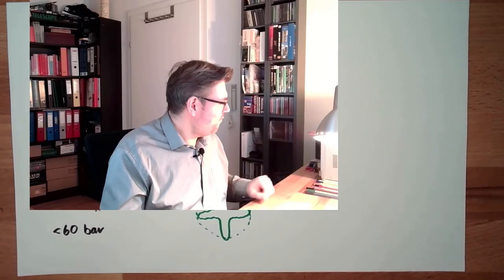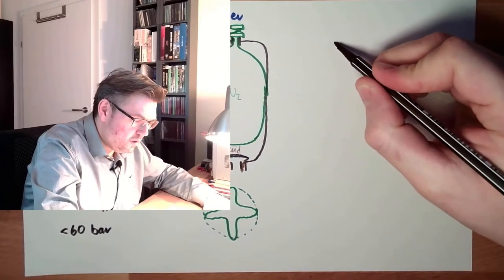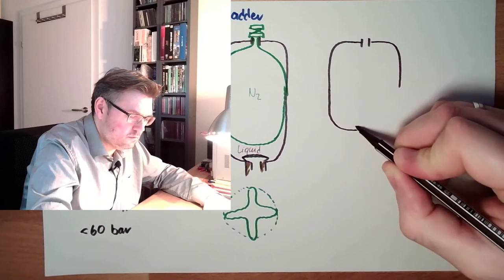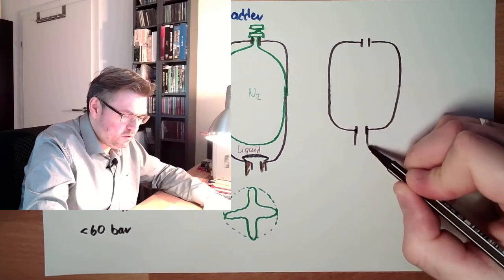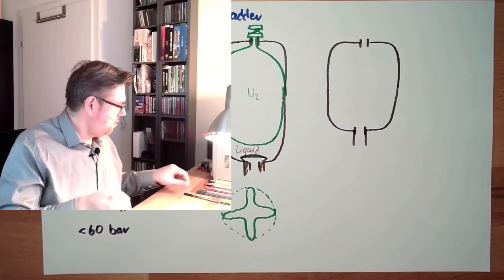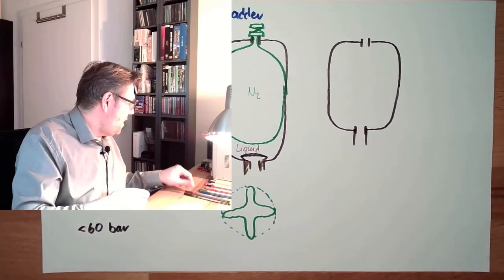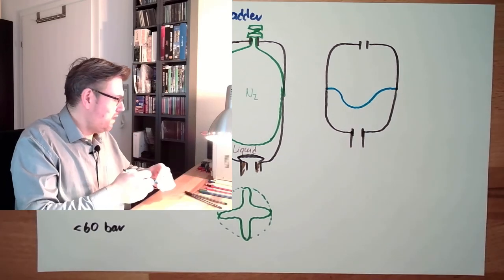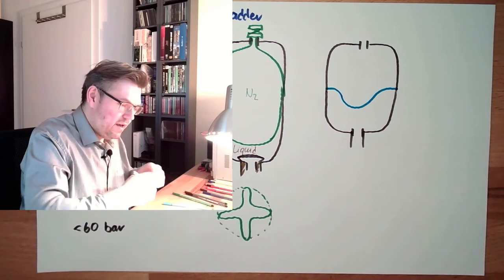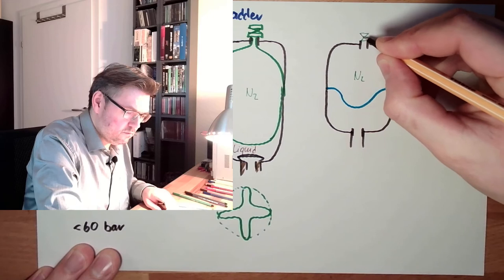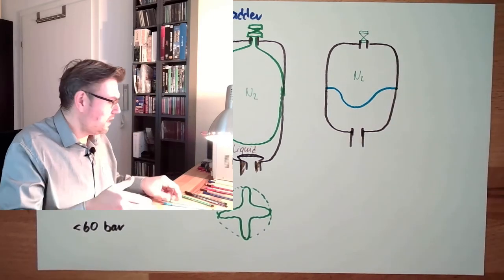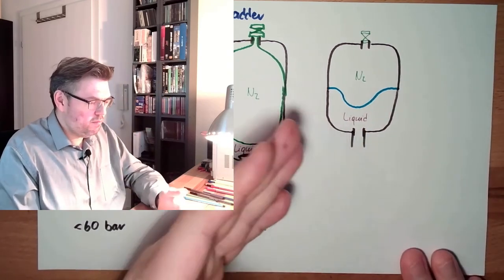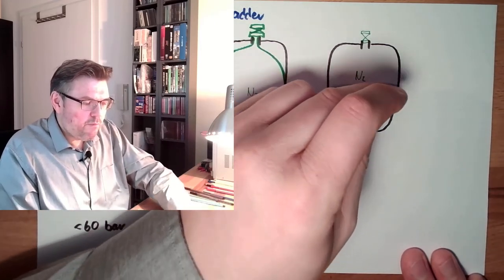Next type of accumulator is the membrane. So there is also a casing. Here's the connection for the oil, for the liquid. And then I have, in between, an elastic membrane here inside. On one side of the membrane, there is my gas phase again. The other side of the membrane, there is my liquid. So it's very similar, it looks very similar to the bladder accumulator. However, it's only a part of this that is elastic.